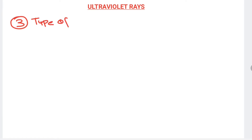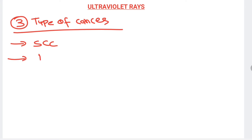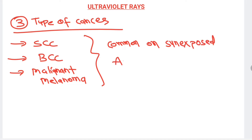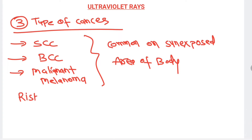Ultraviolet rays can lead to three types of cancer development: squamous cell carcinoma, basal cell carcinoma, and malignant melanoma. These cancers are common on sun-exposed areas of the body, where sun exposure is maximum.